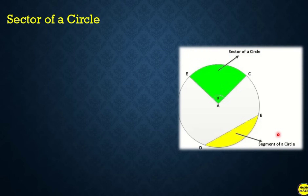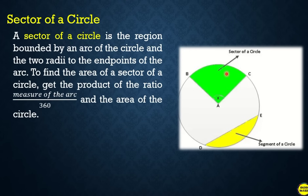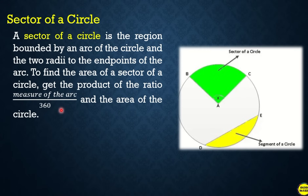A sector of a circle is the region bounded by an arc of the circle and the two radii to the endpoints of the arc — that shaded part in the figure. To find the area of a sector, get the product of the ratio (measure of the arc over 360) and the area of the circle. First get the ratio, then find the area of the circle, then multiply the two.